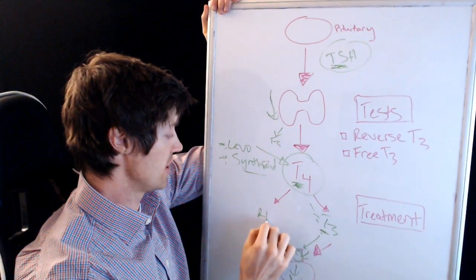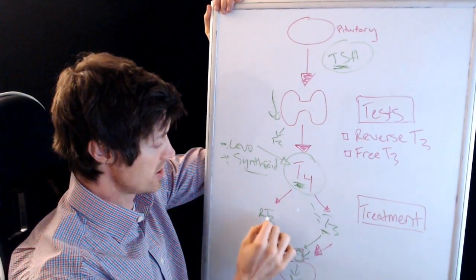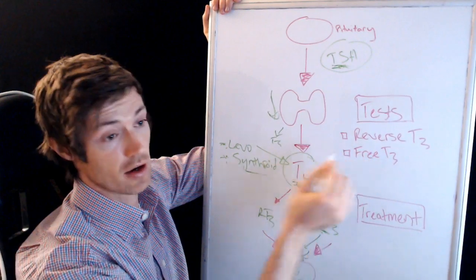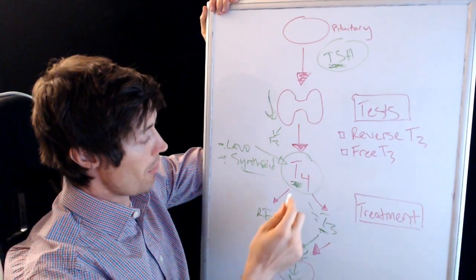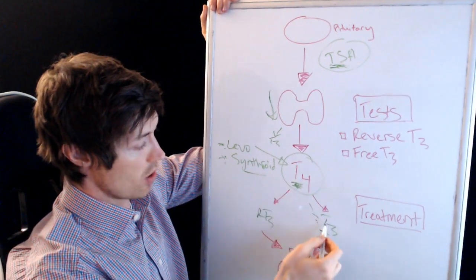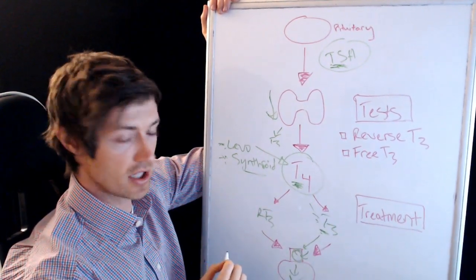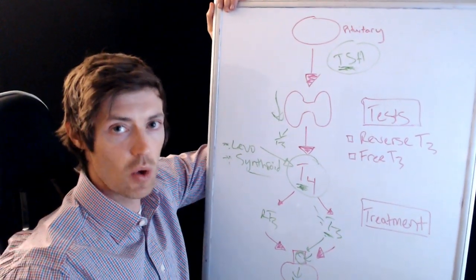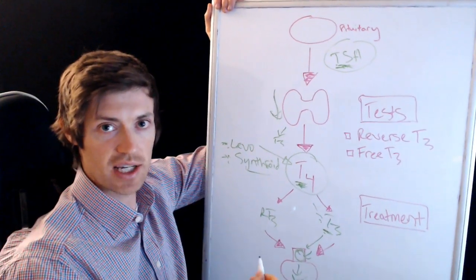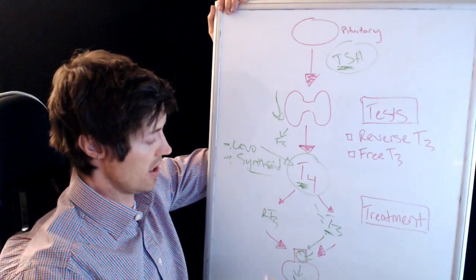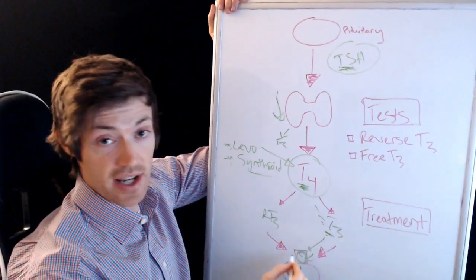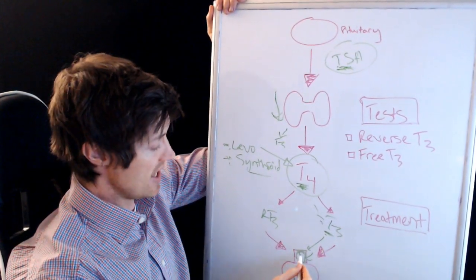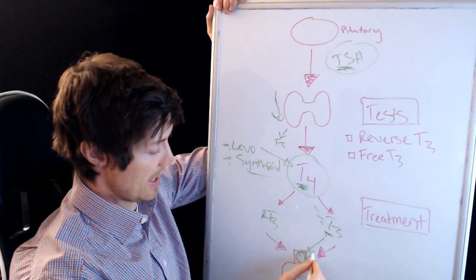RT3 or reverse T3, which you'll see right here. And this is going to be important because we can talk about testing in just a second. So your body has the choice. It can choose to go into T3, or it can choose to go into reverse T3. So how does this relate to weight gain? Because this is really what we're talking about, is how all of this relates to your weight gain. Well, reverse T3 sits on the receptor. They both try and sit on the exact same receptor on the cells, except when reverse T3 gets on it, it blocks it.